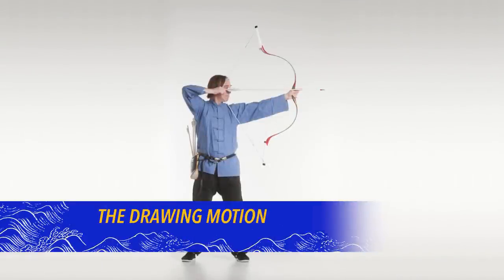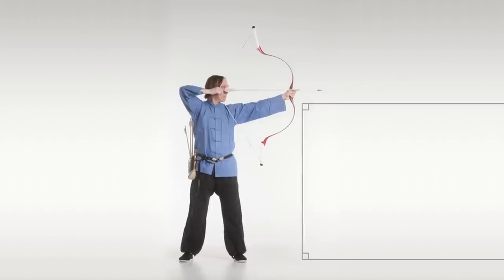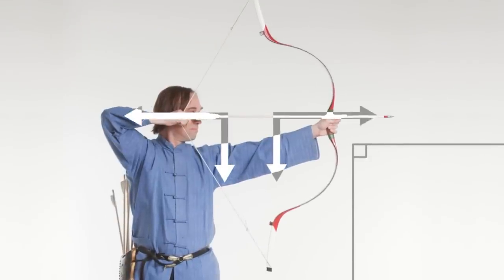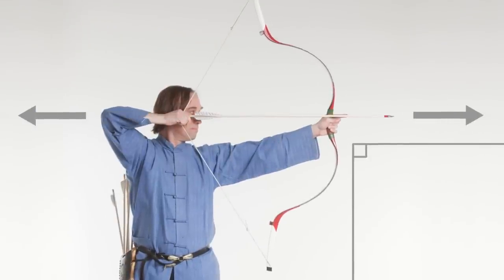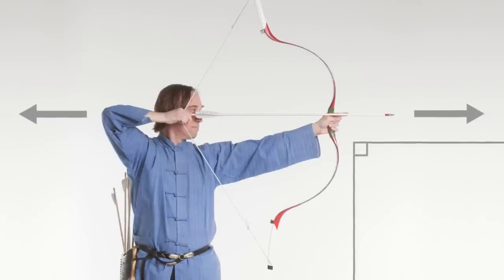From the raised position, begin the drawing motion while keeping the bow upright and perpendicular to the ground. As the arms draw downward, extend outward in opposite directions along a straight line from the extended index finger of the bow hand to the rear string arm elbow.